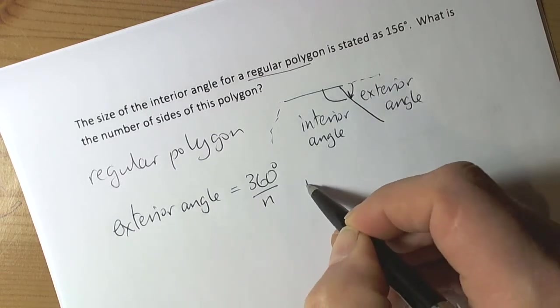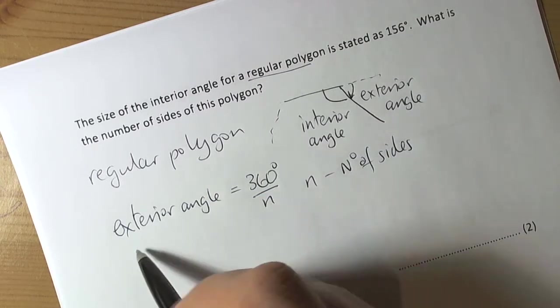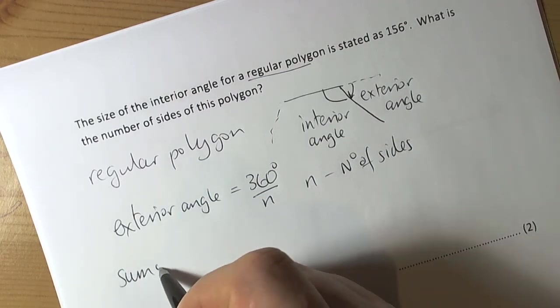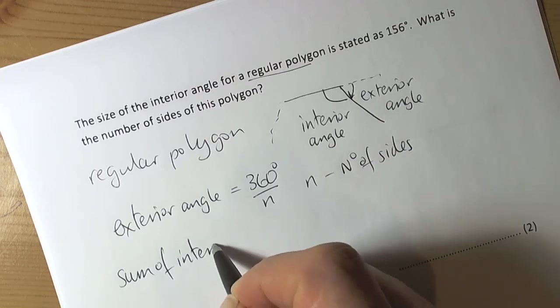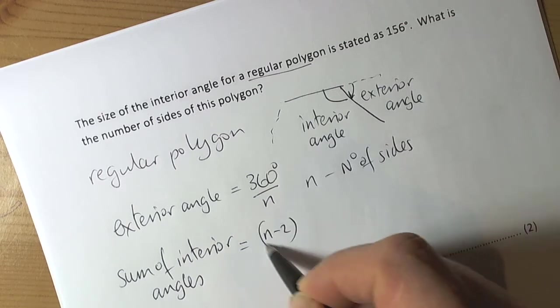The sum of interior angles is equal to (n-2) times 180 degrees—the number of triangles inside a polygon.